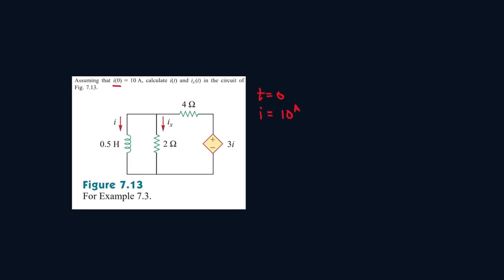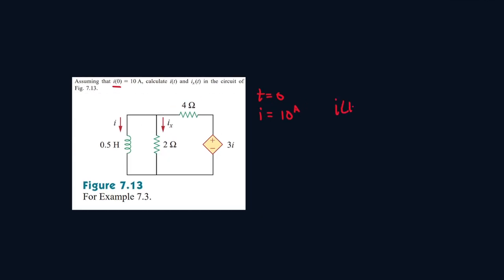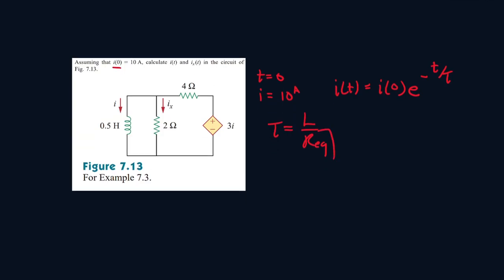To find the formula to represent I(t), it will be I at zero times E to the power of T over the time constant. We're working with the inductor, so the time constant will be the inductance value all over the resistance equivalent. We already know what I of zero is, it's 10 amps.